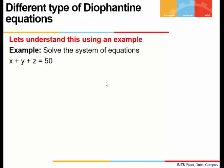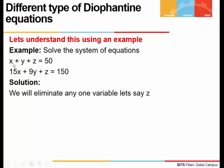To understand this, let's take an example. What if we are asked to solve a system x + y + z = 50 and 15x + 9y + z = 150? We have two equations in this system in three unknowns x, y, z and we have to solve for x, y, z.